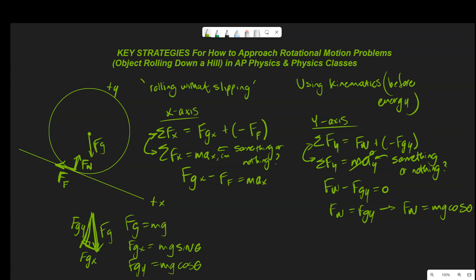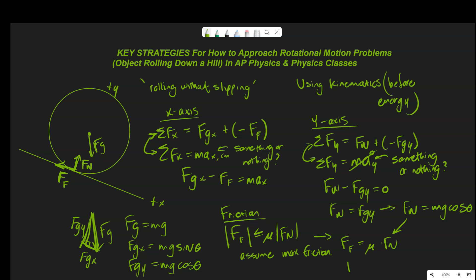The general strategy combines sum of forces in x, sum of forces in y, and the friction equation. Assuming maximum friction, the force due to friction equals mu times Fn. We just solved for Fn, so: force due to friction = mu times mg cosine theta. This is the beginning — nothing significantly different from what we've done before. It's a logical stepwise progression of how to approach force problems. Now let's apply some new rotational ideas.